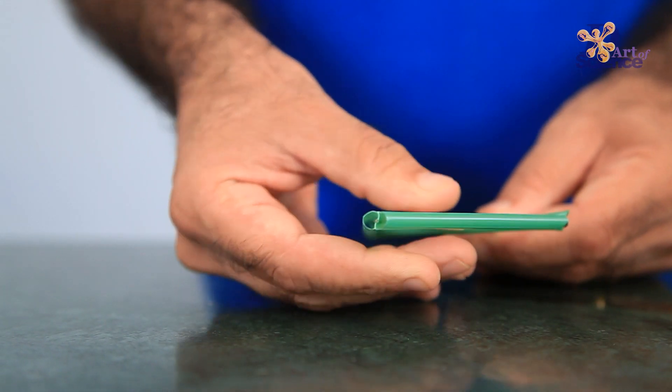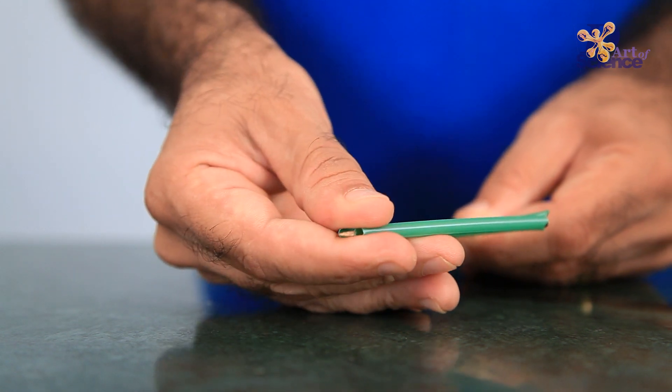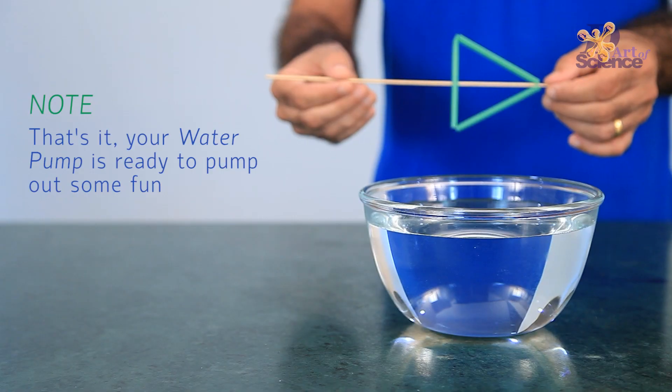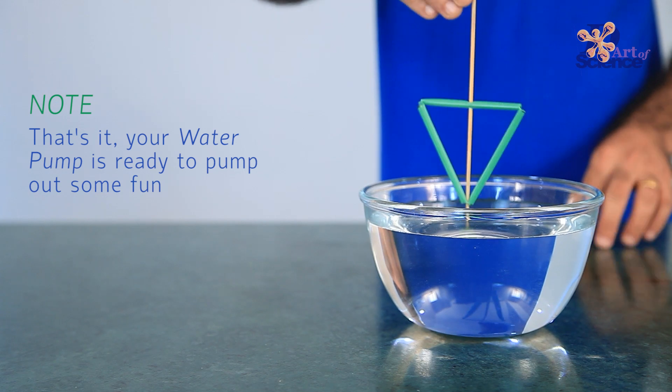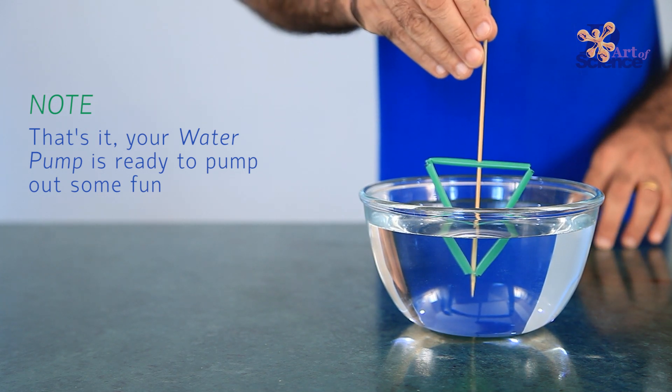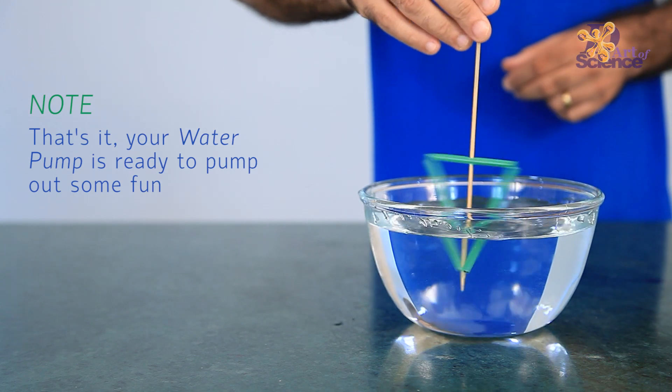The two arms of the triangle that are slanting upwards provide a path for the water to be thrown out, which is why they follow this pattern. Due to vacuum and surface tension, as the water is getting pulled out of the straw, more keeps entering it and the process continues as long as this straw pump keeps rotating.